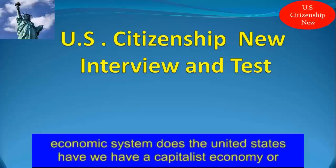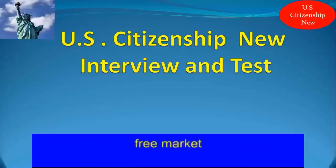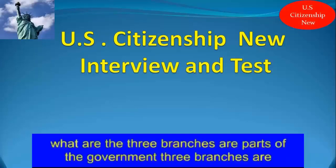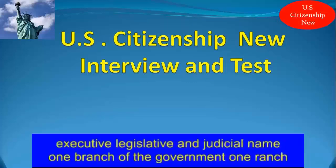What type of economic system does the United States have? We have a capitalist economy, or a free market. What are the three branches or parts of the government? The three branches are executive, legislative, and judicial.